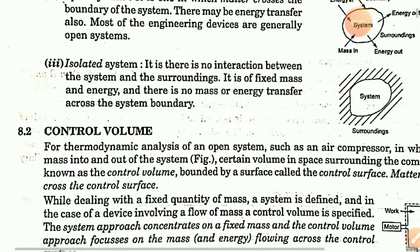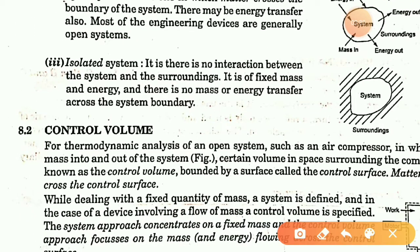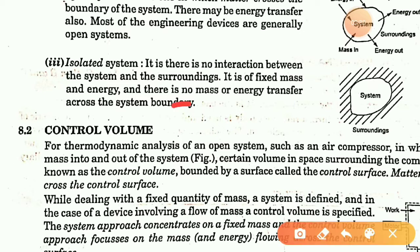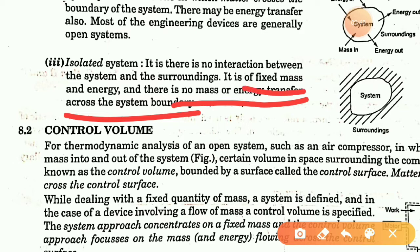An isolated system has no interaction with the surrounding. There is no energy transfer and no mass transfer in an isolated system. It has a fixed mass and fixed energy. Since there is no mass or energy transfer, it is physically isolated.